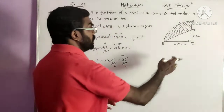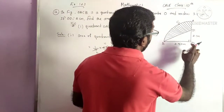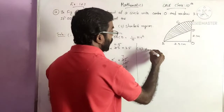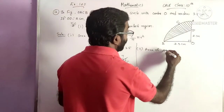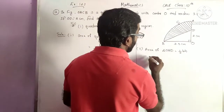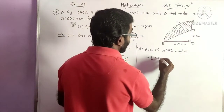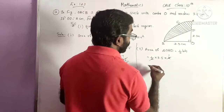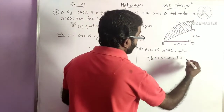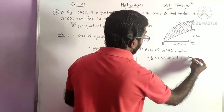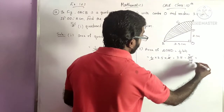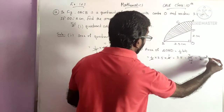For the shaded region, we first find the area of right triangle OBD. Area of triangle OBD equals half base times height, that is half into 3.5 into 2. Writing 3.5 as 35 by 10, we get 7 by 2 cm square.